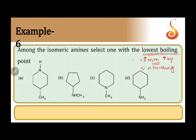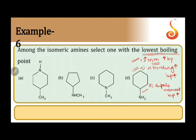We can consider a series of steps to determine which compound has the highest boiling point. First, compare the molecular mass. Next, consider whether hydrogen bonding is present — if hydrogen bonding is present, boiling point is high. The third factor is dipole moment — if dipole moment is high, boiling point is high. A minor additional point is branching: if branching is more, boiling point is less.